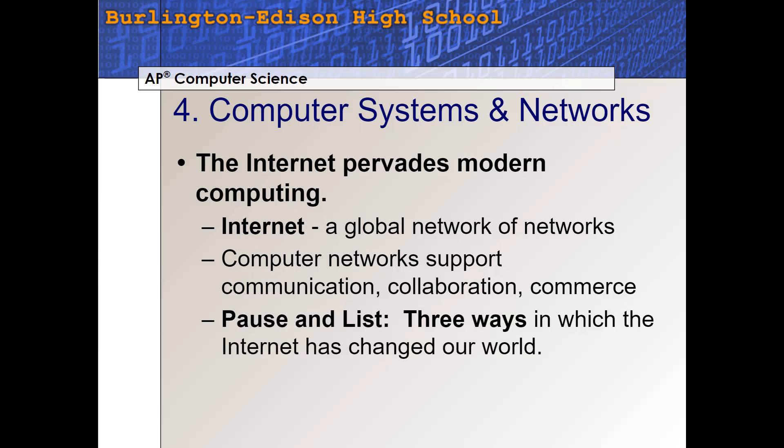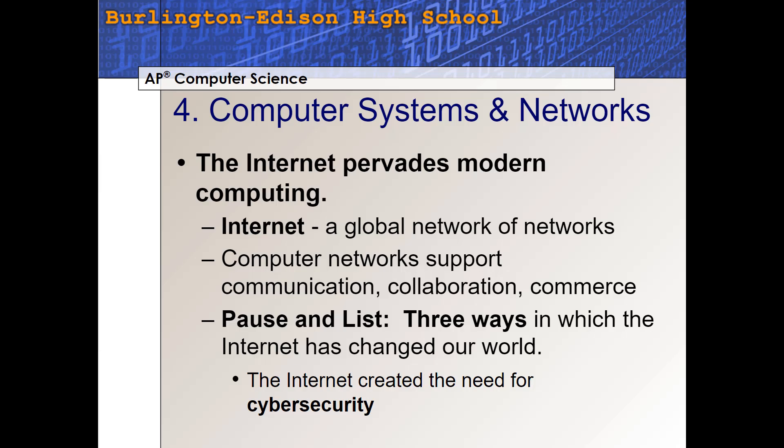Computer networks support communication, collaboration, and commerce — networks are everywhere and a big part of our life. Pause the video and list three ways in which the internet has changed our world. I'll give you one: the internet created the need for cybersecurity. Before the internet, you never had to worry about someone stealing your identity online because there was no online. But now that's a really big concern — there's a whole industry built up around cybersecurity. That is one way our world has changed because of the internet. There are lots of ways, so try to list some.